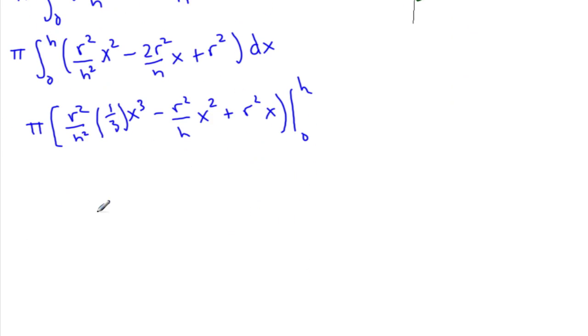Now plug in h. We get π times (r²/h² times 1/3 h³ - r²/h times h² + r²h). This is all minus zero, since plugging in zero gives zero for all terms. So now we can simplify this.